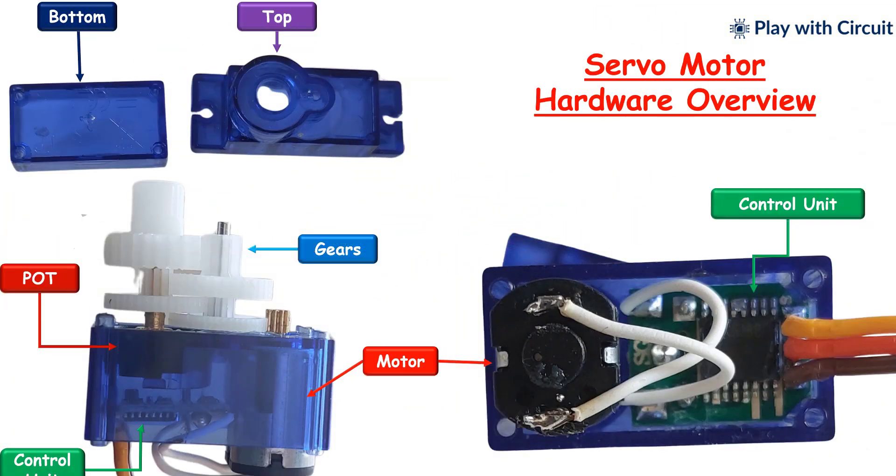A servo motor is a rotary actuator that can rotate or move to a specific position and speed, allowing for precise control of angular position, acceleration, and velocity.